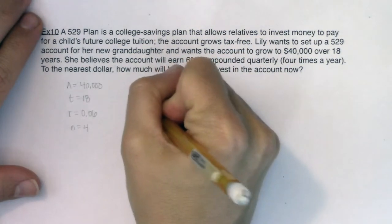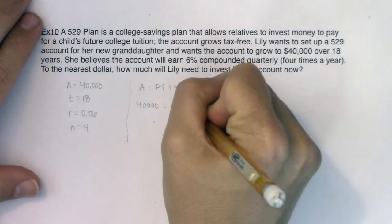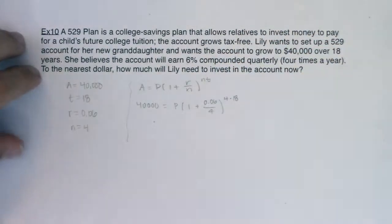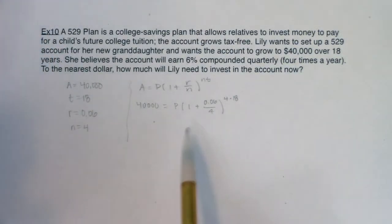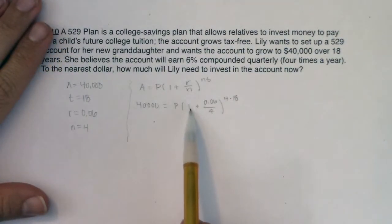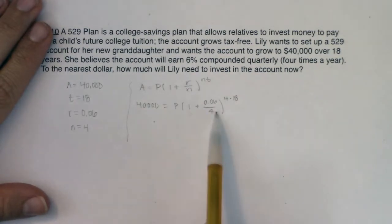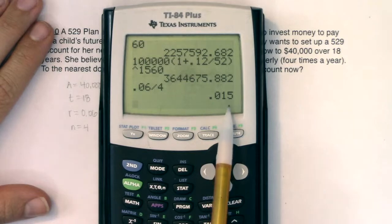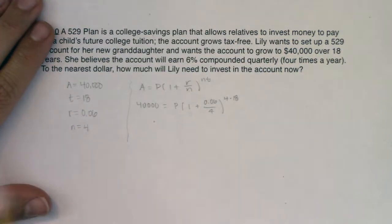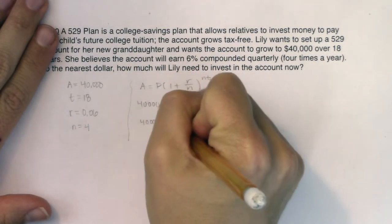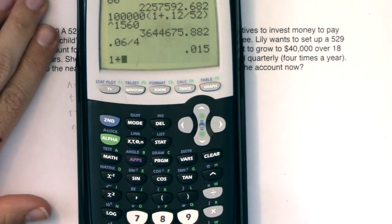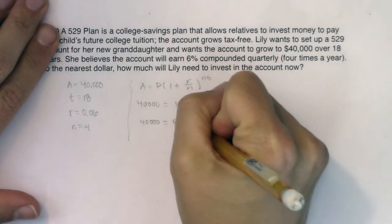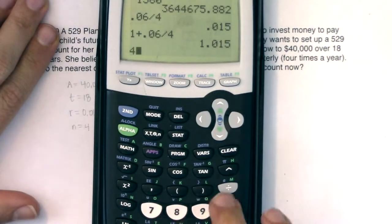So this time I know: 40,000 is going to be equal to P times (1 plus 0.06 over 4), where N was 4 and T was 18. Now like I warned you in example 9, I'm not going to round off any of my answers until the bitter end. I have exponential growth here because I see my base of 1 and then I'm adding to it. So 0.06 divided by 4 — I'm growing at about 1.5% per quarter. So we have 40,000 equals P times (1.015) raised to the power of 4 times 18, which is 72.